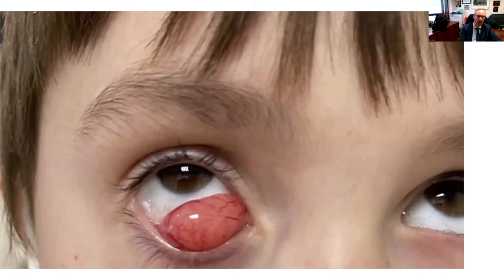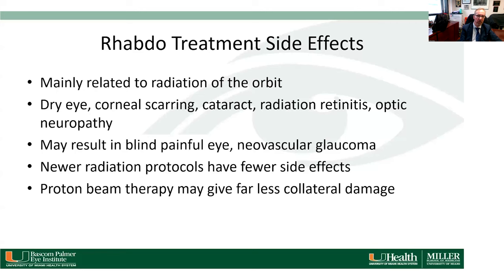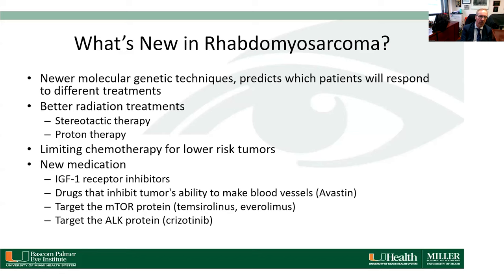This patient had a Group 1 disease — a rhabdomyosarcoma of the inferior orbit that we were able to completely excise without residual disease. These are rare but do occur. Treatment side effects are usually due to radiation therapy. When confined to the orbit, patients develop dry eye, corneal scarring, and most commonly cataract — often requiring cataract surgery later. Radiation retinitis and optic neuropathy are very rare with modern radiation protocols.